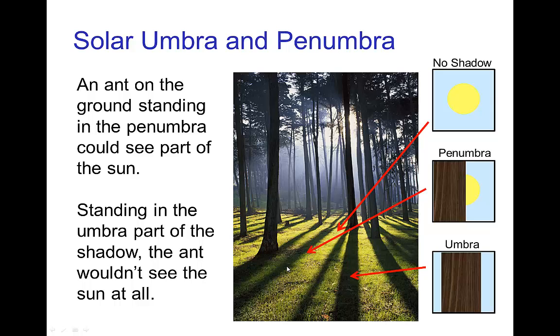If you are in the region which is the penumbra, the fuzzy part of the shadow, then looking up at the sun, you see part of it blocked by the tree. That's why it's not as bright as when there's no shadow, but it's not as dark as in the umbra where you can't see the sun at all.